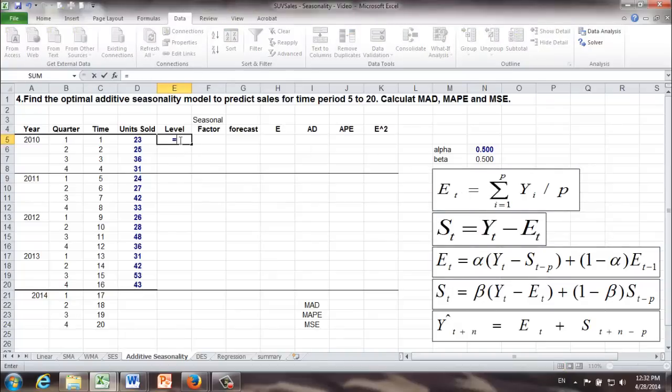Here is how it works. Because P is equal to 4, one year has four quarters, we cannot calculate base levels for time period 1, 2, 3, and 4 using the regular formula. Instead, here is what we are going to do. We are going to use the first formula. The first level will be equal to the average sales of the first year or of the first four quarters.